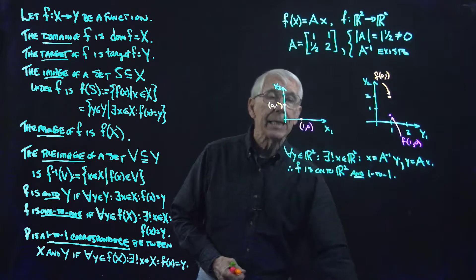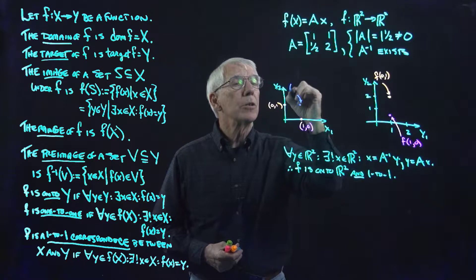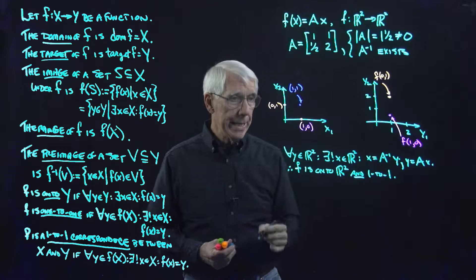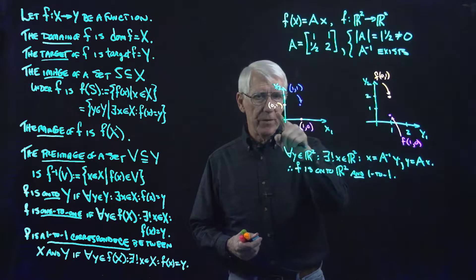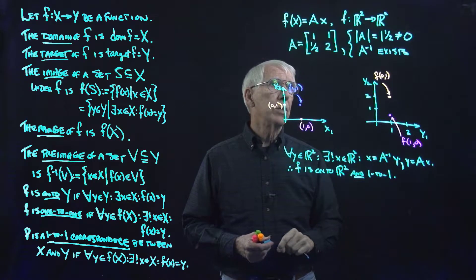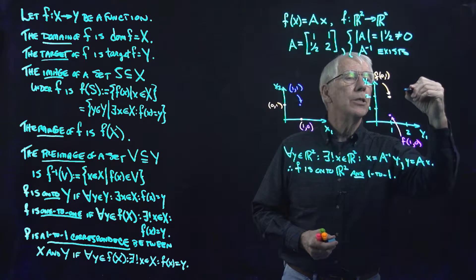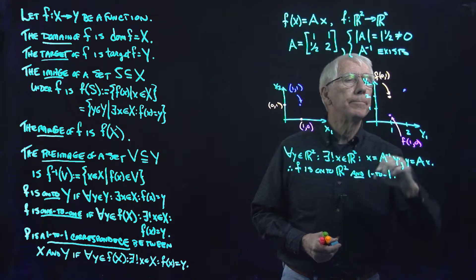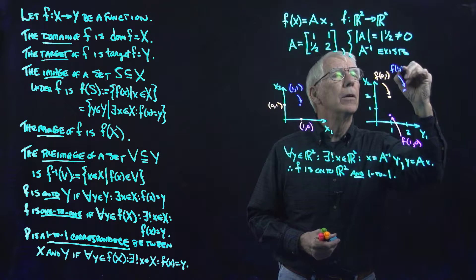And last, let's look at the vector (1, 1). That gets mapped to, of course, the sum of those two vectors, which is (2, two-and-a-half). So go up from 2 to about two-and-a-half — that will be about there. So that is f of (1, 1).